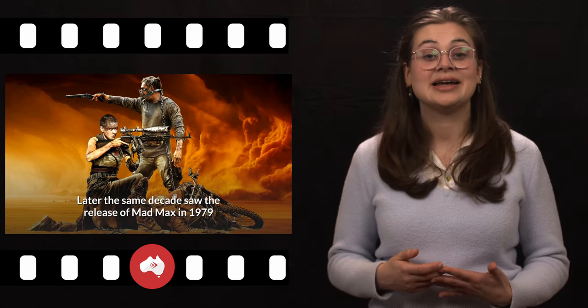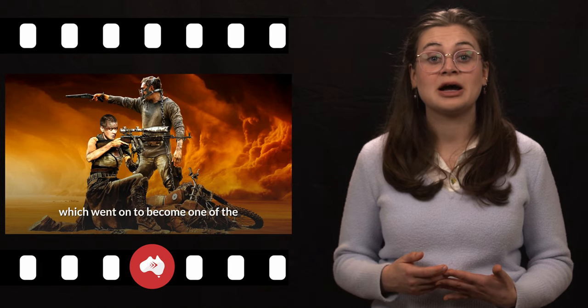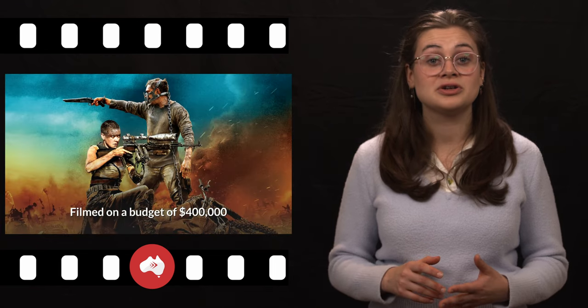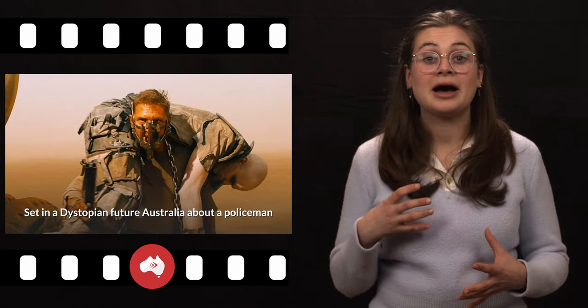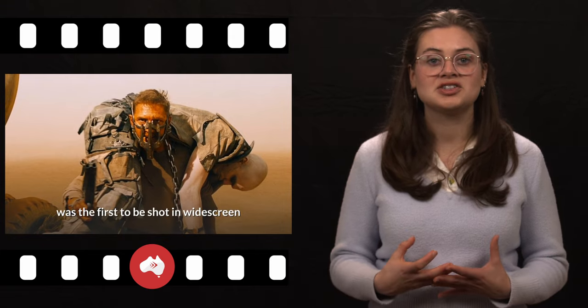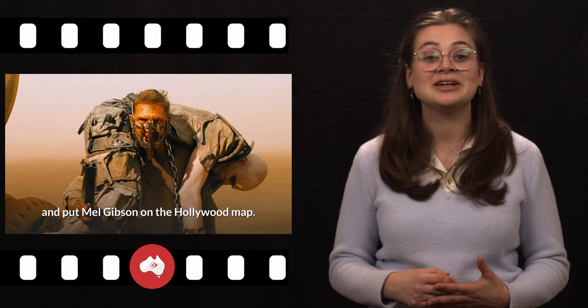Later the same decade saw the release of Mad Max in 1979, which went on to become one of the most successful Australian films ever. Filmed on a budget of $400,000, it earned more than $100 million worldwide and held the Guinness record for most profitable movie with the highest box office to budget ratio of any motion picture at the time. Set in a dystopian future Australia about a policeman trying to stop a violent motorcycle gang, the film, which went on to spawn three sequels, was the first to be shot in widescreen and put Mel Gibson on the Hollywood map.